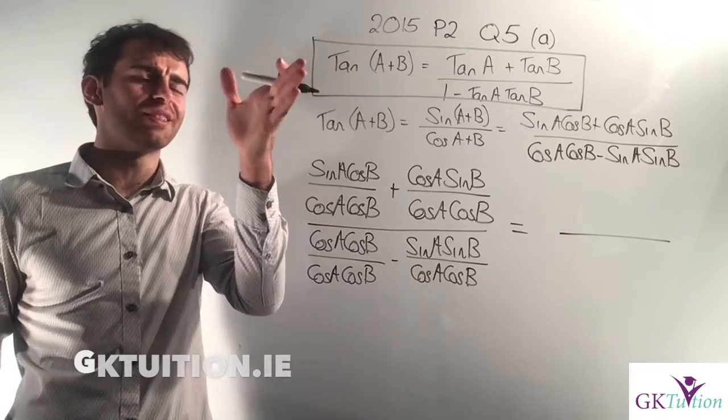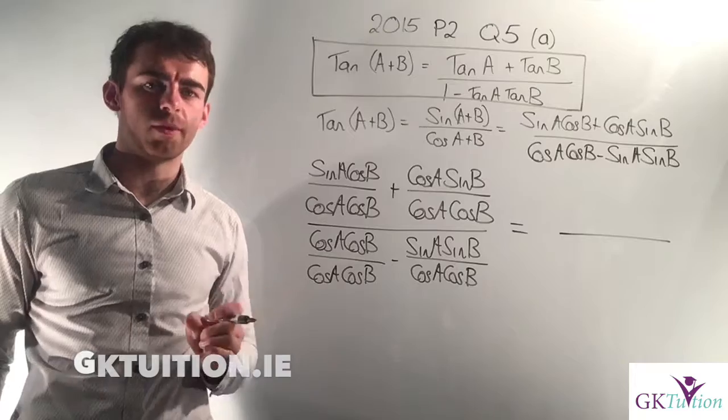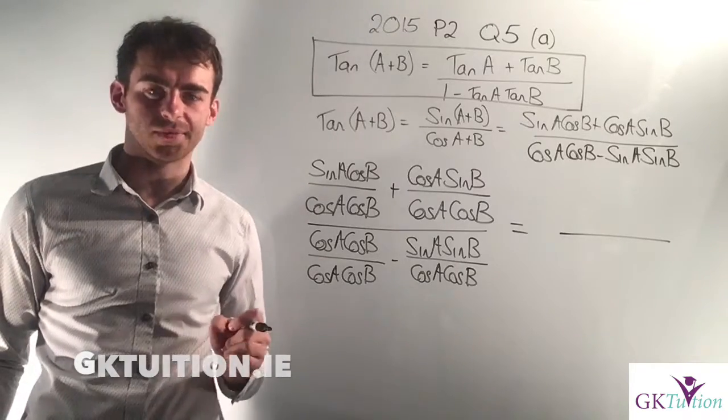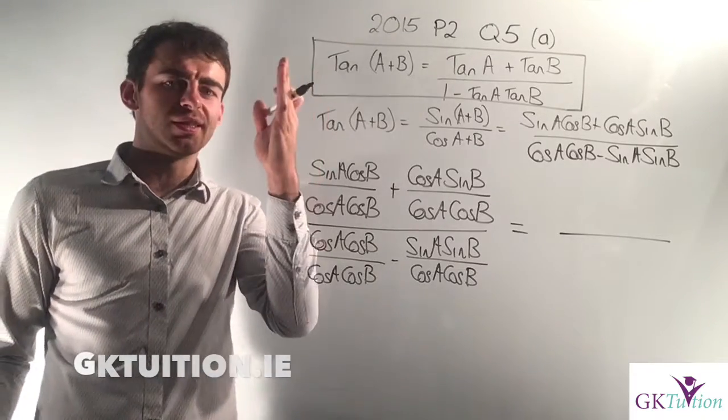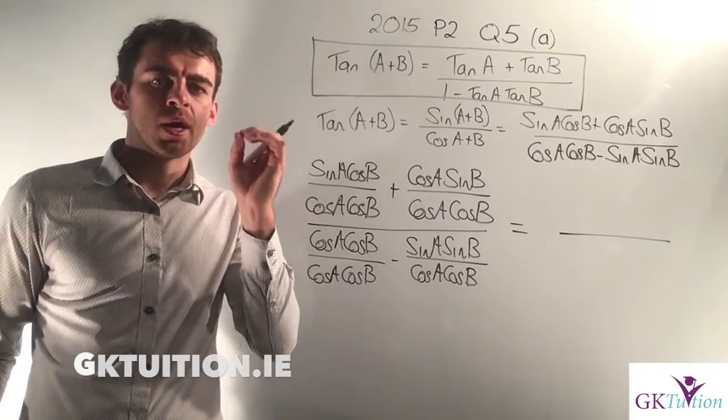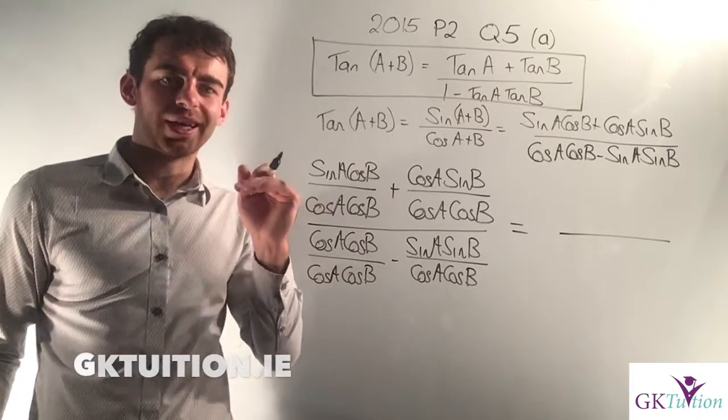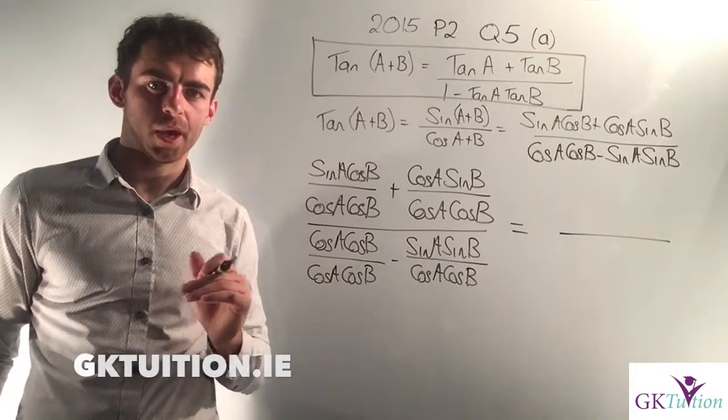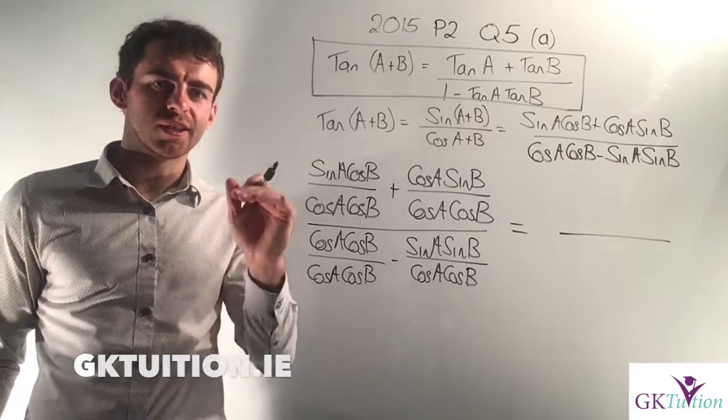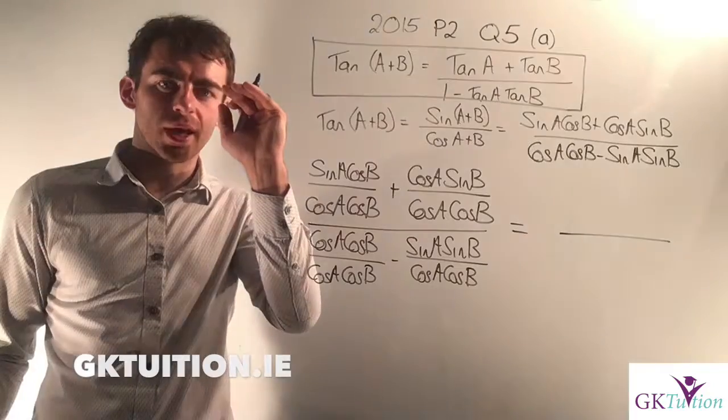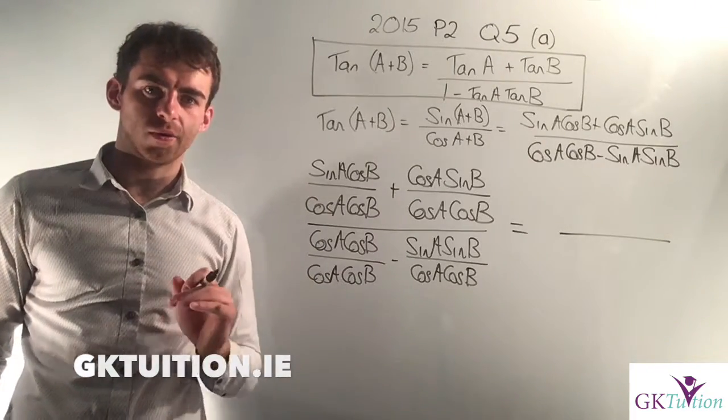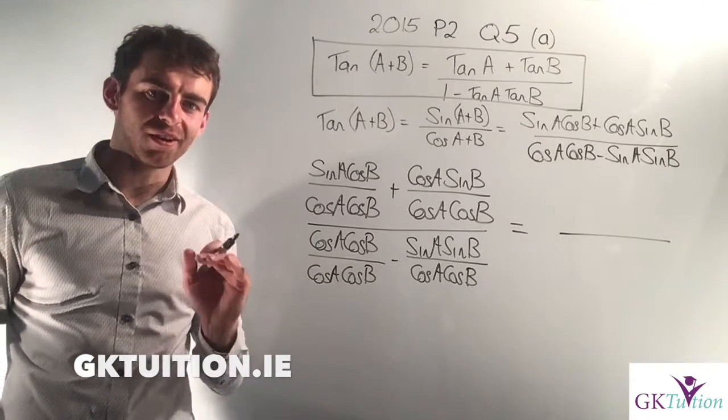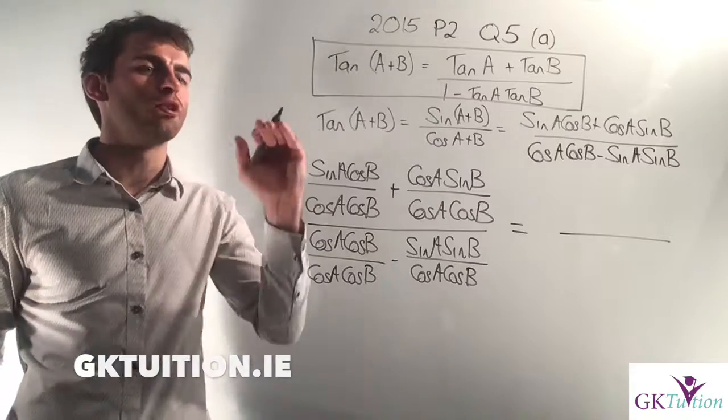The first thing I want you to recognize is that this is one of our compound angle formulas from page 14 in the log tables. Because this is a compound angle formula, I can only use things that precede it in the log tables in order to prove it. If you look at page 14 in your log tables, the compound angle formulas come before the double angle formulas, which means that I cannot use a double angle formula in order to prove this.